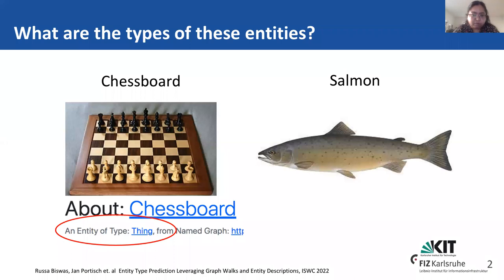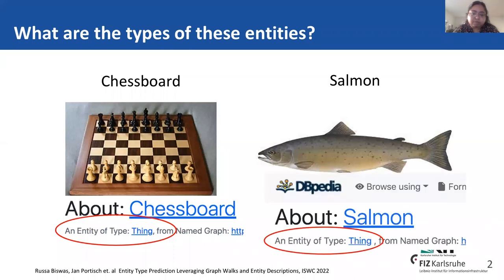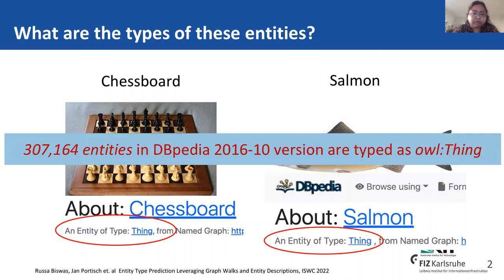Similarly, for salmon, we all know it's a fish, but DBpedia again tells me it's a thing. So similar to chessboard and salmon, there are about 307,164 entities in DBpedia 2016-10 version which are typed as the most general class, which is owl:thing.